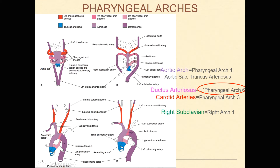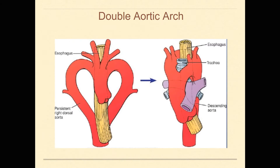The double aortic arch occurs when one of the first steps fails to occur. The subclavian is attached here — this is the portion that attaches to the left seventh intersegmental artery. They usually stay together; if this doesn't break off, then you have this arch that wraps around structures that go through there, including your esophagus. This can also wrap around your trachea and esophagus, which can be very suffocating for the respiratory system or block the ability to swallow. This needs to be fixed right away once the baby is born and starts feeding.